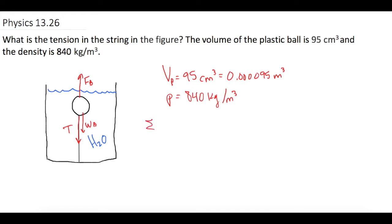So if we sum our forces in the y direction, we get the buoyant force minus the tension minus the weight of the ball is equal to 0 because it's not accelerating in the y direction. Now they tell us what is the tension in the string. So now let's move over tension.